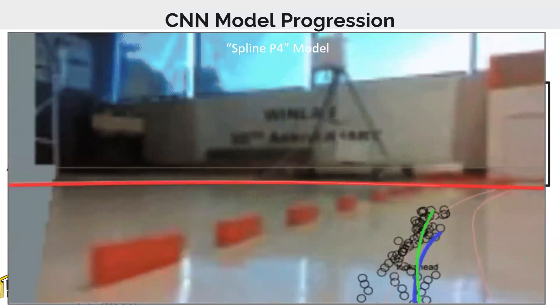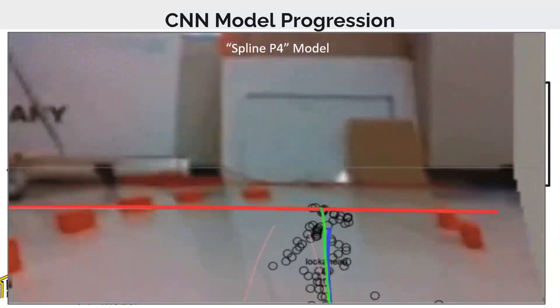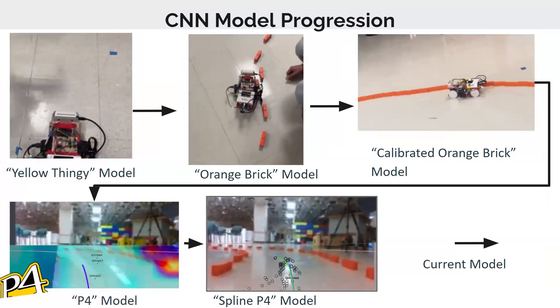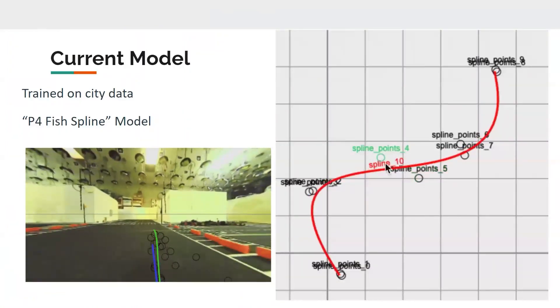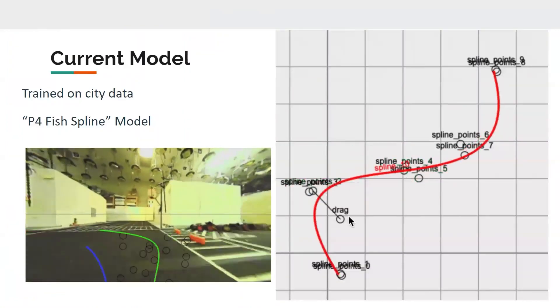Which basically gave us a more accurate path. And then finally, moving on to our current model, which is our ultimate Fisheye P4 spline model, you can see here.